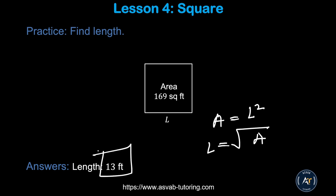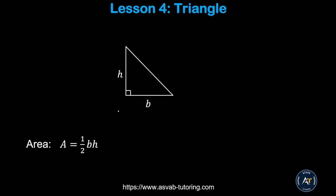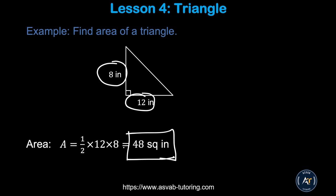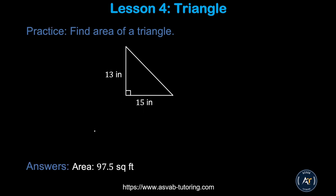Next we'll learn how to find the area of a triangle. The area of a triangle equals base times height divided by 2, or one-half times base times height. Applying this formula: the base is 12 and the height is 8, so one-half times 12 times 8 equals 48 square inches.